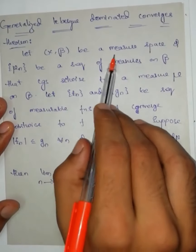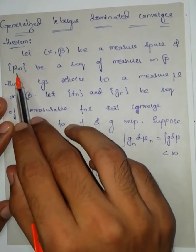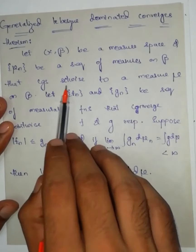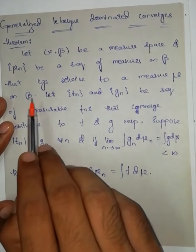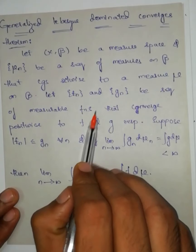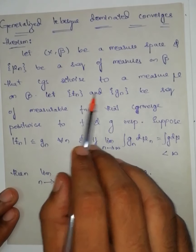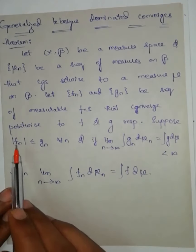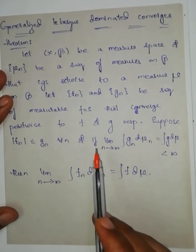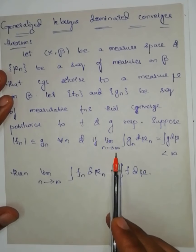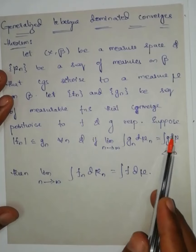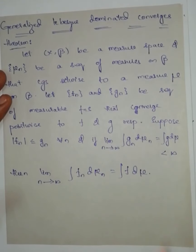Let (X, B) be a measure space and μ_n be a sequence of measures on B that converges setwise to a measure μ on B. Let f_n and g_n be a sequence of measurable functions that converge pointwise to f and g respectively. Suppose |f_n| ≤ g_n for all n and lim_{n→∞} ∫g_n dμ_n = ∫g dμ, which is finite. Then we have to prove this.